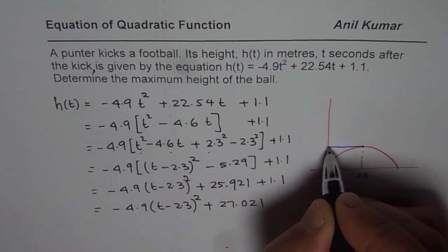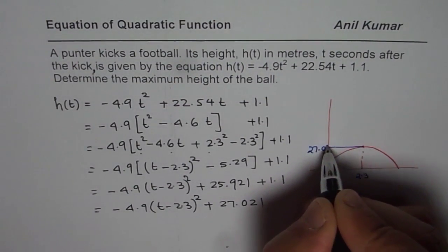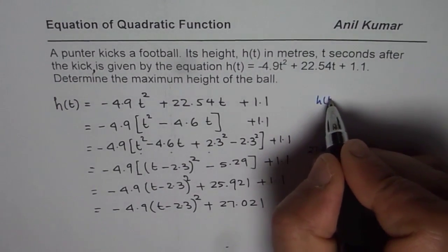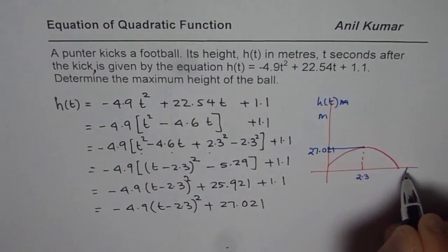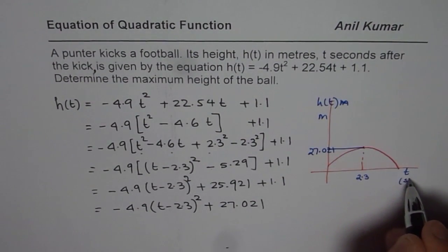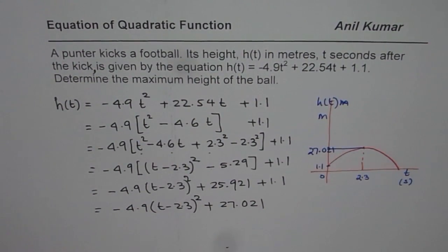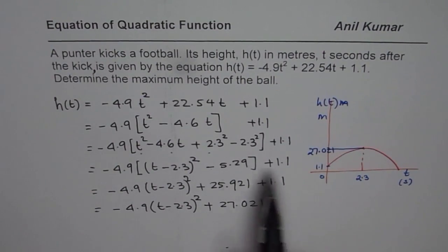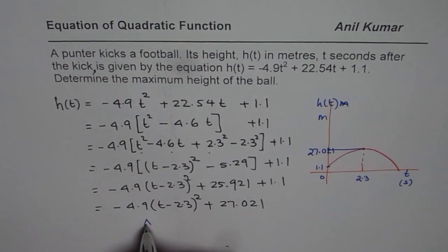And the maximum height is 27.021 in meters. So this is h(t) in meters here, and that is time in seconds. And this 1.1 is definitely the starting point. When you plug in 0 for t, you get initial height. So our answer is, maximum height is 27.021 meters.